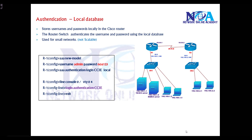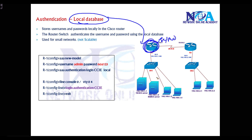Authentication using local database. We can do AAA authentication using a local database — the usernames and passwords are stored on the local device. If any user tries to log into the device using Telnet or SSH, the router checks the local database and will allow the user to log in if credentials match.